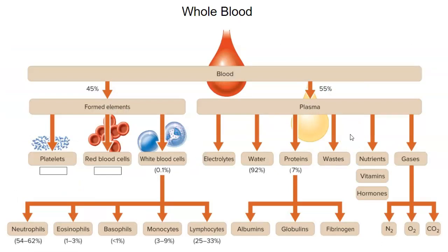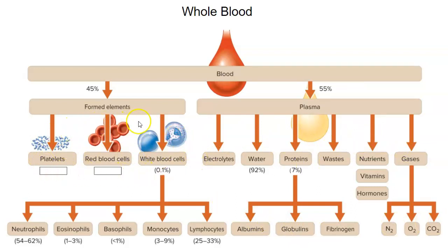Whole blood can be spun down into the formed elements, which includes mostly red blood cells and a little bit of platelets and white blood cells. The other 55% is blood plasma, which contains electrolytes, water, proteins, waste, nutrients, and gases. Focusing on the cells, there are five types of white blood cells: neutrophils, eosinophils, basophils, monocytes, and lymphocytes. We'll learn how to identify those under a microscope.